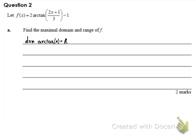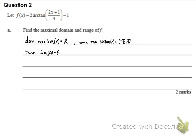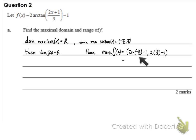Let's have a look. Relate it first to the domain of the normal arctangent function — that is all real numbers. Then the domain of our function must also be all real numbers. Now let's look at the range of the normal arctan graph, which goes from minus π/2 to positive π/2. So the range of the function must be between 2 × (−π/2) − 1 and 2 × (π/2) − 1, and we get this as a result.